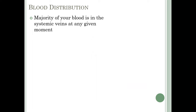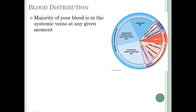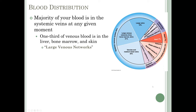Let's look at the distribution of blood through the entire circulatory system. The majority of blood is in the systemic circuit veins at any given moment: 64% in the systemic venous system, 9% in the pulmonary circuit, 7% in the heart, 13% in systemic arteries, and 7% in systemic capillaries. Of all the venous blood, one-third of that 64% — about 21% — is found in the liver, bone marrow, and skin, which are called large venous networks.